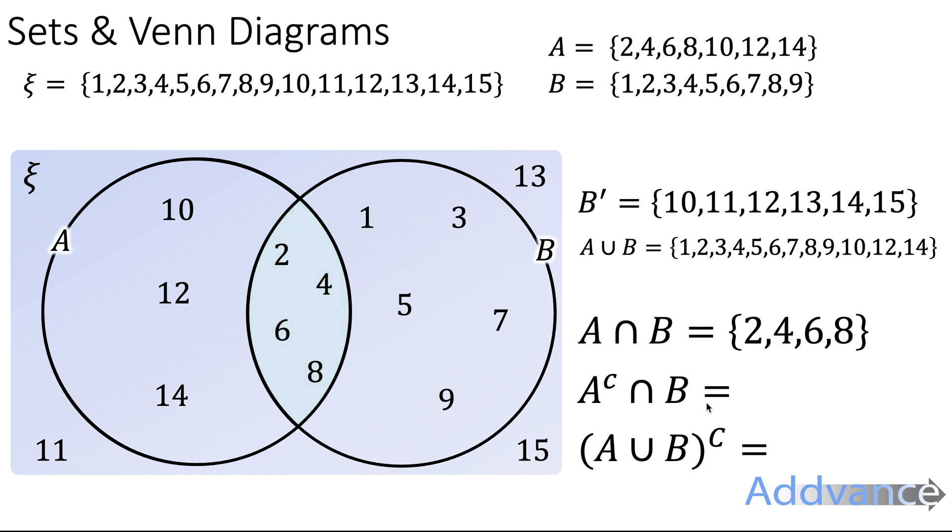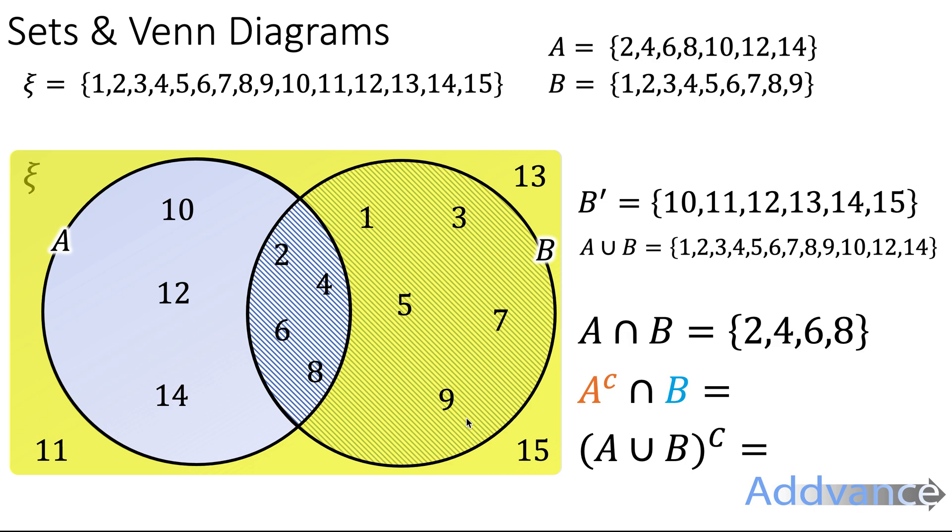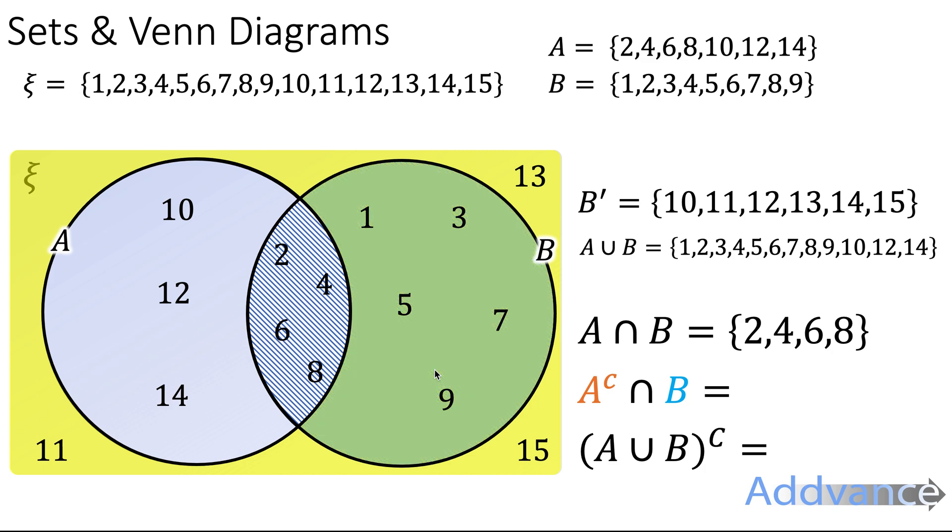Now, A complement intersection B. This is a bit more complicated. So let's first look at A complement. A complement is everything outside of A, which I've highlighted in yellow here. Now, let's highlight B. So B is everything in this stripy circle here. We're interested in the intersection between these two sets. That is where these two sets overlap. Where do these two sets overlap? Well, it's where the stripy part is also yellow. I've highlighted that in green here. That is the intersection of A complement and B: 1, 3, 5, 7, and 9.